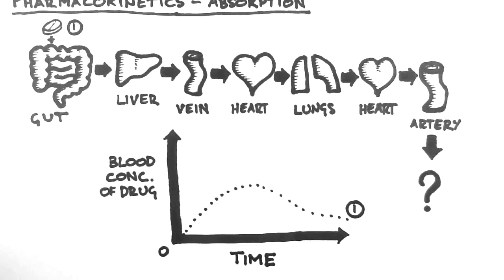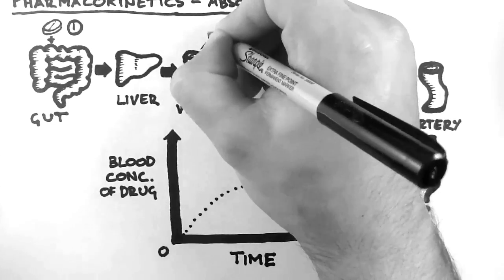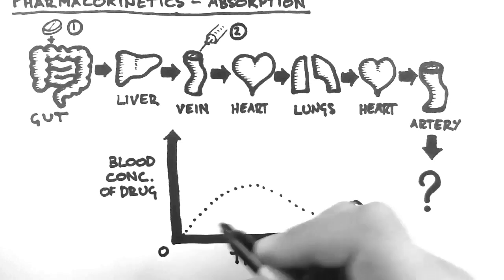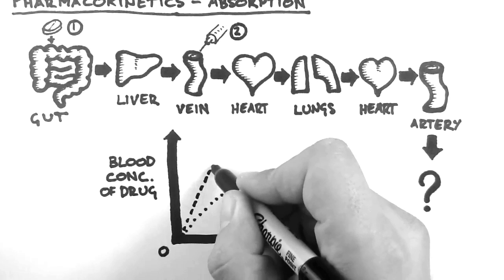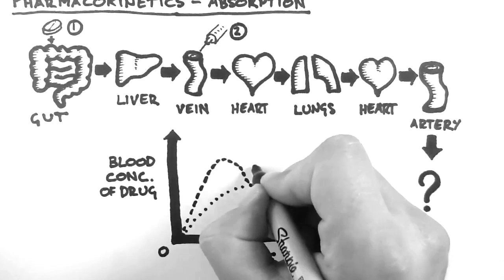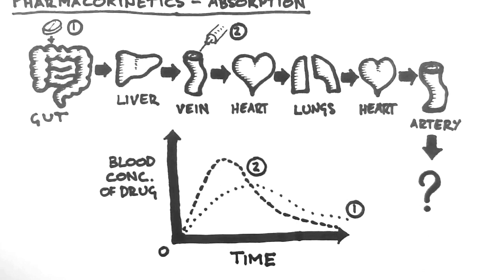We'll now contrast that with intravenous administration. Assume that we give the same dose of the drug intravenously, and this drug does not undergo first-pass metabolism. In intravenous, or IV, administration, the drug doesn't have quite such a long journey to reach the arterial circulation, as it only has to go to the heart, the lungs, back to the heart, and then to the arteries. This results in a quicker rise of drug concentration. Note that the Cmax is larger and the Tmax is smaller, even though the dose was the same. This is because IV is a more direct route of administration than orally.